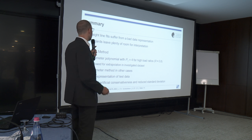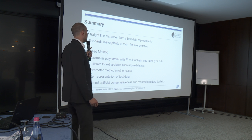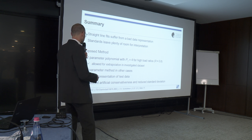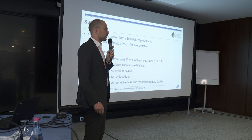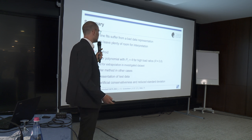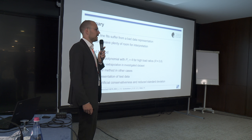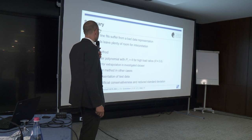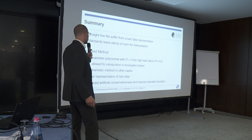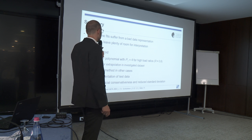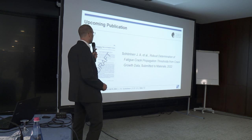To sum up: the standards suggest methods that are not precisely described, leaving plenty of room for interpretation — a weakness of these standards. We propose using a two-parameter polynomial for high load ratios where crack closure is not expected, and this method even allows extrapolation of threshold values. Using the three-parameter method, we consistently obtained conservative fits that represent the test data much better, reducing artificial conservatism and reducing standard deviation between tests. All of this will be available in an upcoming publication.